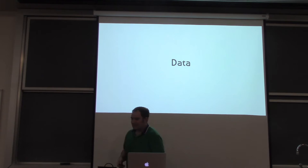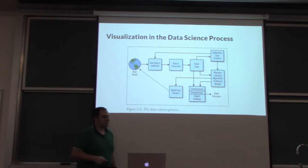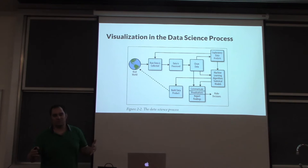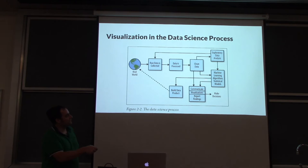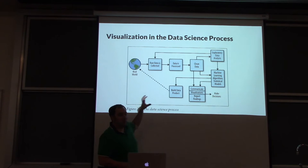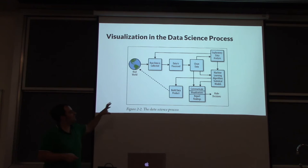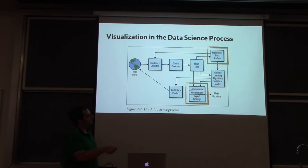Visualization is part of the data science and data exploration process. We have the real world, collect raw data, process it, clean it, then go into exploratory data analysis — looking at the data first to see what it looks like. From there we can go into machine learning, algorithms, or statistical modeling. We also want to communicate results, visualize findings, and either make decisions or build a data product. This lecture covers exploratory data analysis and communication of findings.